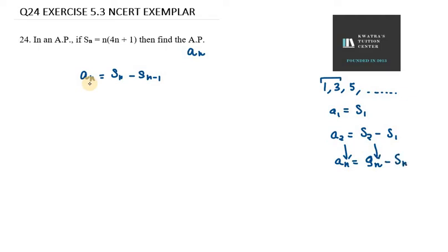So therefore, an equals Sn minus Sn minus 1. So now apply this, we have to find An value. So Sn first we will write. So Sn is 4n square plus n.